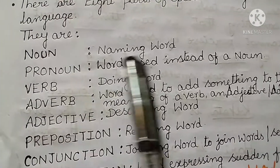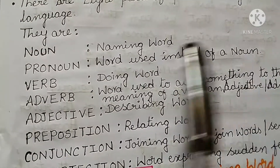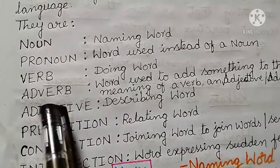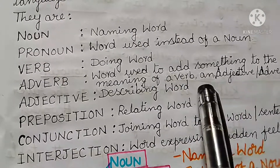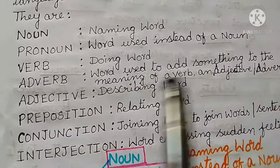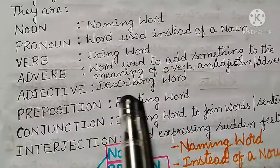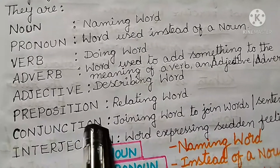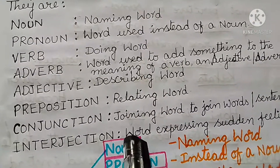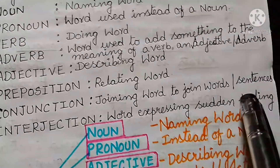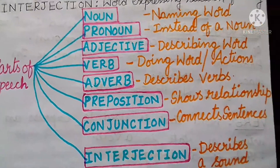First, Noun is a naming word. Pronoun is used instead of a noun, that is, in place of a noun. Verb is a doing word. Adverb is a word used to add something to the meaning of a verb, an adjective, and an adverb itself. Adjective is a describing word. Preposition is a relating word. Conjunction is a joining word — to join words or sentences. Interjection is a word expressing sudden feeling. This is the table of the 8 parts of speech.